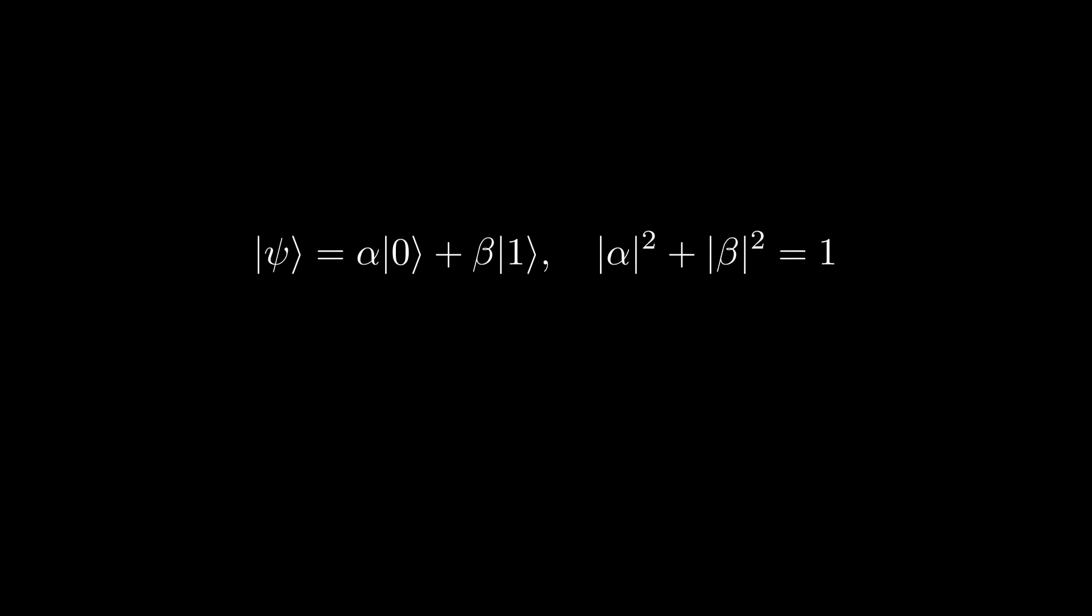When we are looking at single qubit pure states, we describe the general form of the state of a qubit as a superposition between states 0 and 1 with coefficients alpha and beta, such that the square root of the absolute value of alpha squared plus that of beta squared is equal to 1.